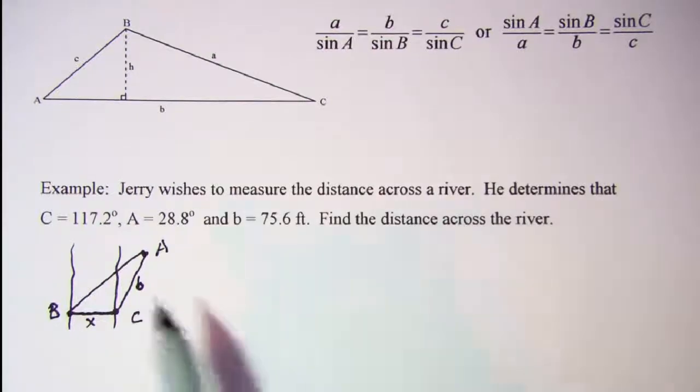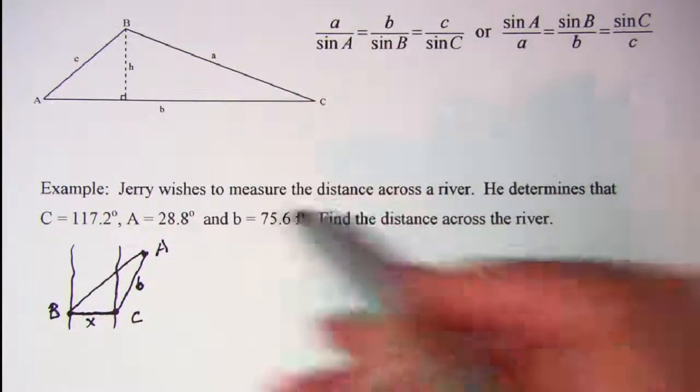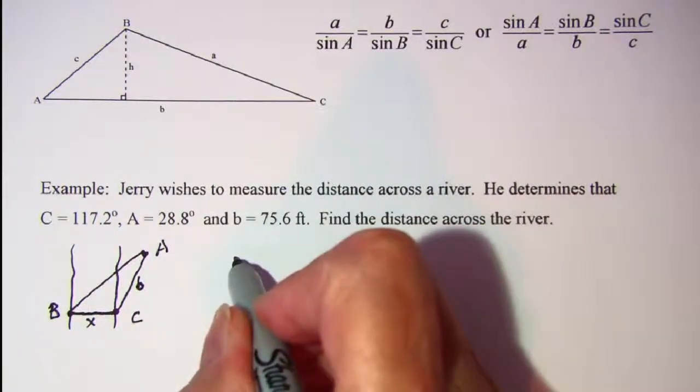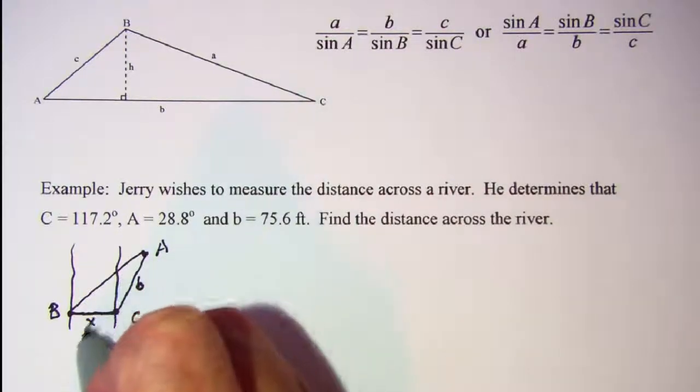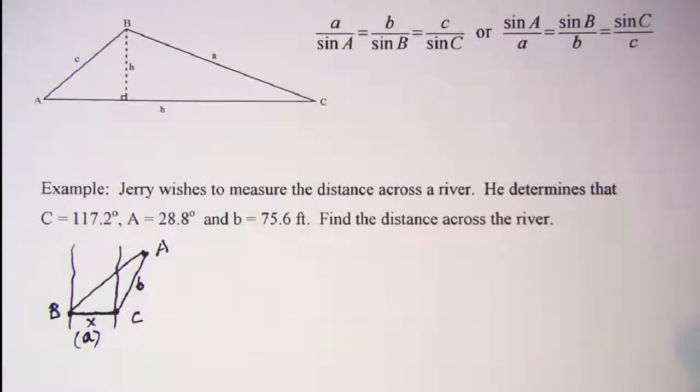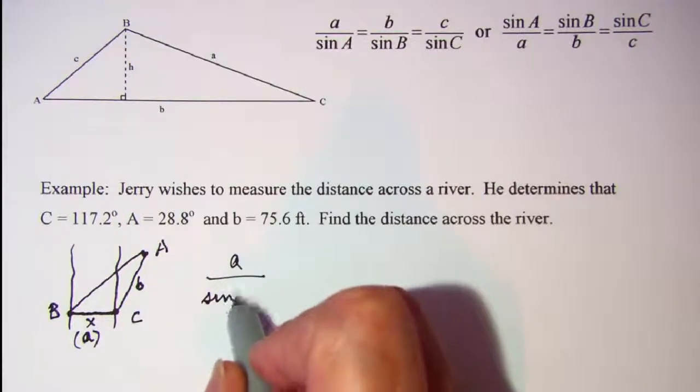Okay, just in case you needed a picture, but we can set up our Law of Sines. We know that X is the side opposite angle A, so that's really our side A. So we have a over sine of A as b over sine of B.